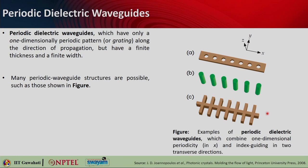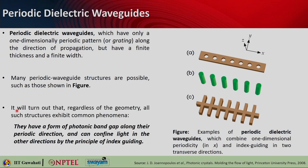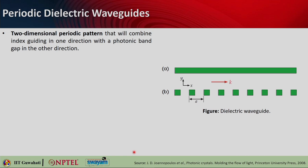Regardless of geometry, these structures exhibit a common phenomenon: they have a form of photonic band gap along their periodic direction while confining light in other directions by index guiding. We can also look for two-dimensional periodic patterns that combine index guiding in one direction with photonic band gap in another direction. For example, consider a two-dimensional dielectric waveguide with permittivity epsilon equals 12, periodic in x with period a, having finite height or width of 0.4a.